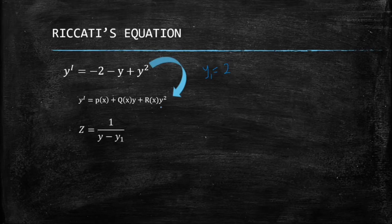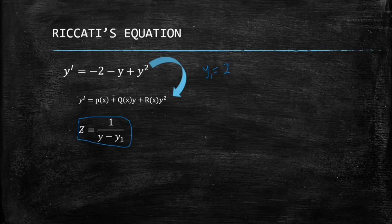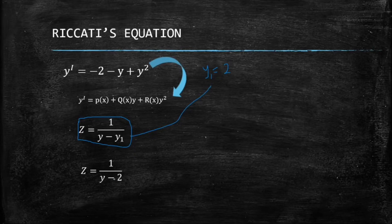Why do they give you y₁? There is a key formula you must know for Riccati's equation: the substitution z = 1/(y - y₁). Since y₁ = 2, we substitute to get z = 1/(y - 2).